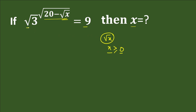Here the base is square root 3 and on the right hand side we have 9. We can write 9 as 3 squared. On the left hand side we have square root 3, and we can write square root 3 as 3 to the power 1/2. So we will replace square root 3 with 3 to the power 1/2.